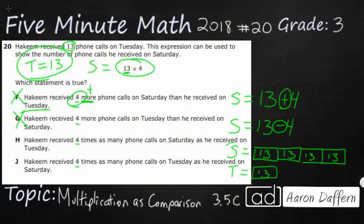So this all goes here to number, to H. Hakeem received four times as many phone calls on Saturday. Well, guys, it looks like this might work because look at my Saturday is four times as big as my Tuesday. I'm comparing Saturday and Tuesday. That's what it means with multiplication as comparison. We're not doing equal groups necessarily. We're comparing.